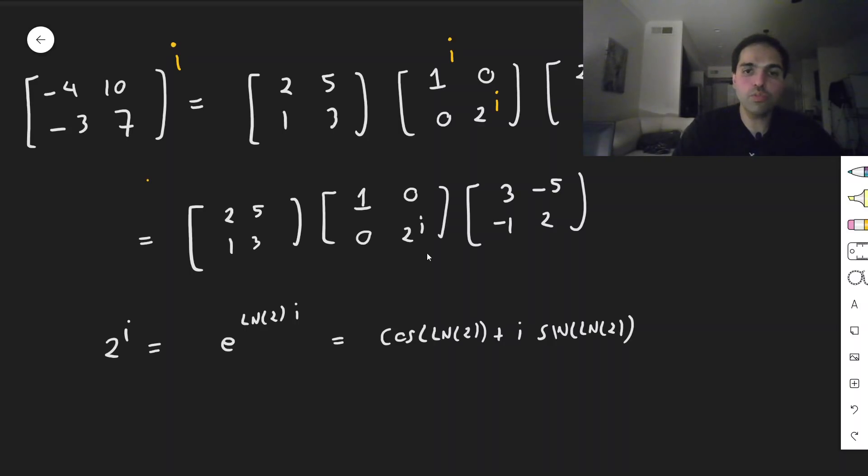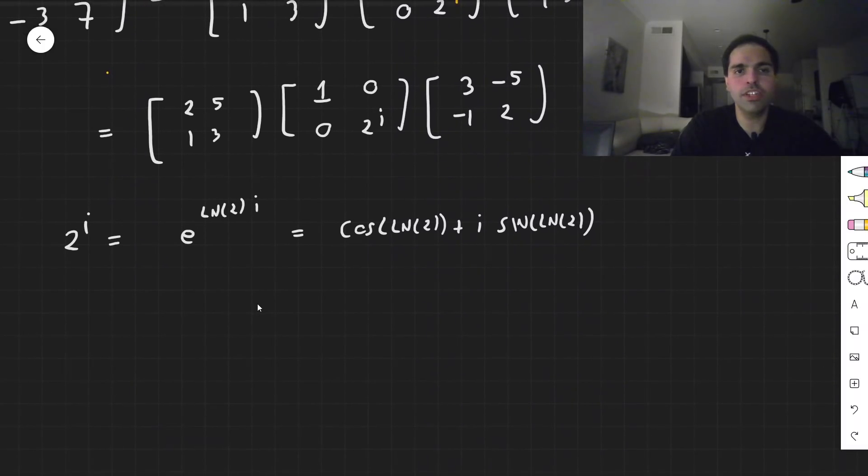In other words, what does this become? You just replace 2 to the i with this gibberish, so we get, and again, this is pretty long, 2, 5, 1, 3, 1, 0, 0.